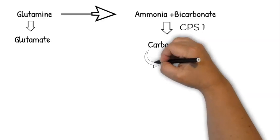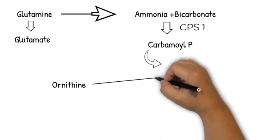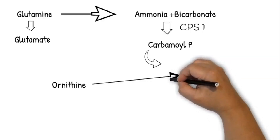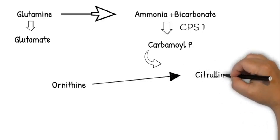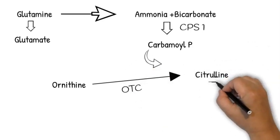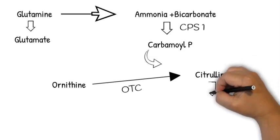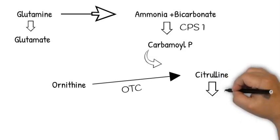This intermediate is called citrulline, and this reaction is catalyzed by OTC, or ornithine transcarbamoylase. The citrulline, once formed in the presence of aspartate, which brings in the second nitrogen into this urea cycle...